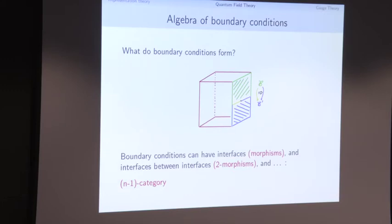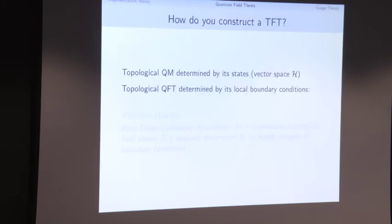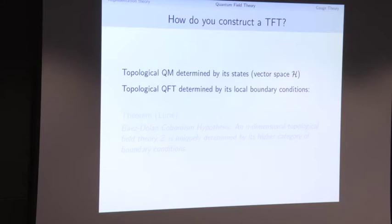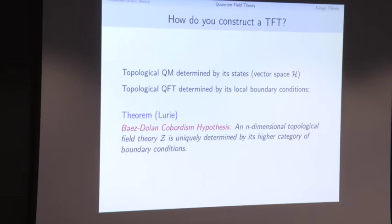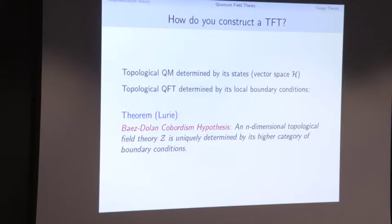That's the algebraic structure we see when we look at the space of states. Instead of a vector space, they form some higher category. Now we can ask: how do you describe a topological field theory from its states? Topological quantum mechanics was determined by a vector space — the space of states. A topological field theory is likewise determined by its collection of states, or local version of states — the boundary conditions. This is captured in the beautiful theorem of Jacob Lurie: the cobordism hypothesis. An n-dimensional topological field theory in this extended sense is completely determined by this category of boundary conditions.